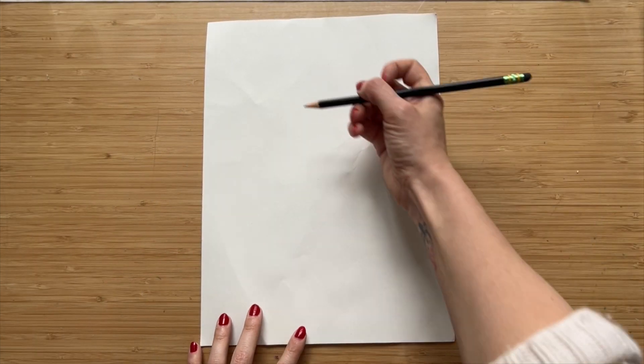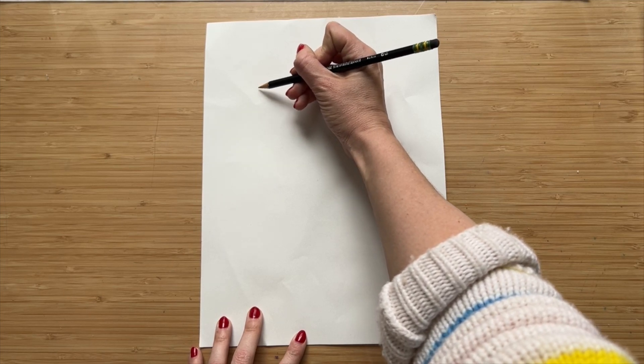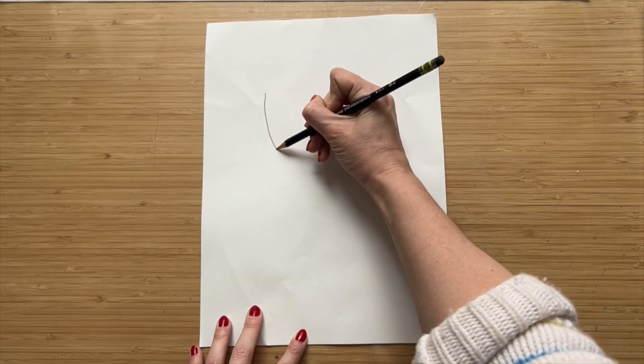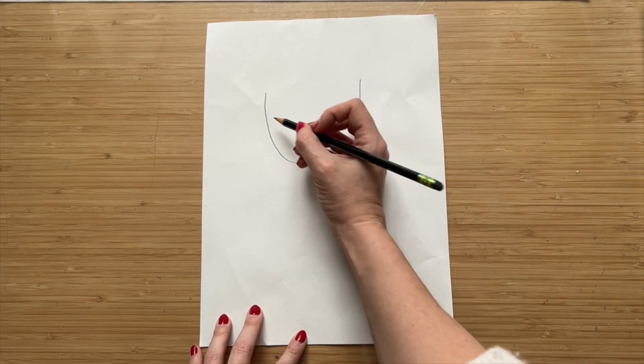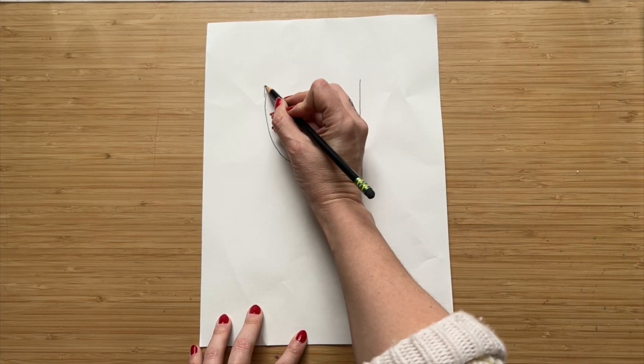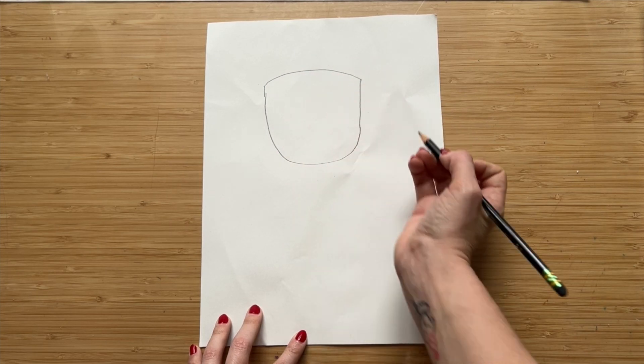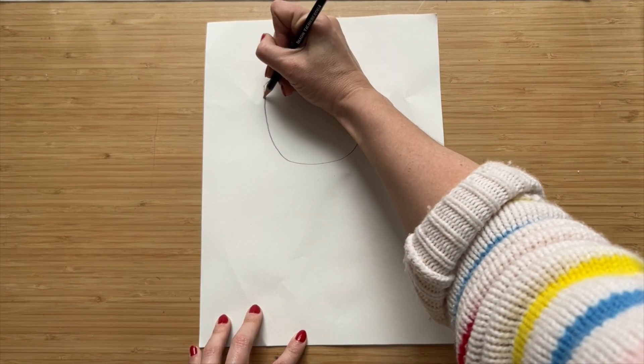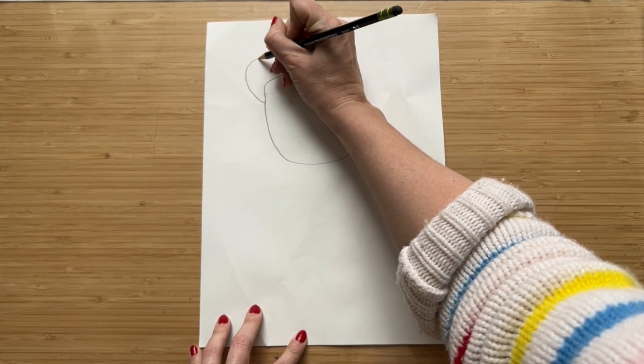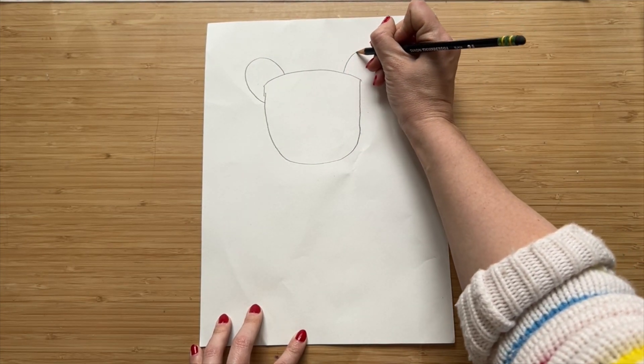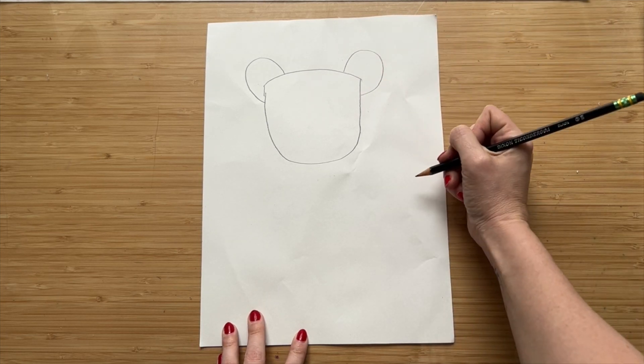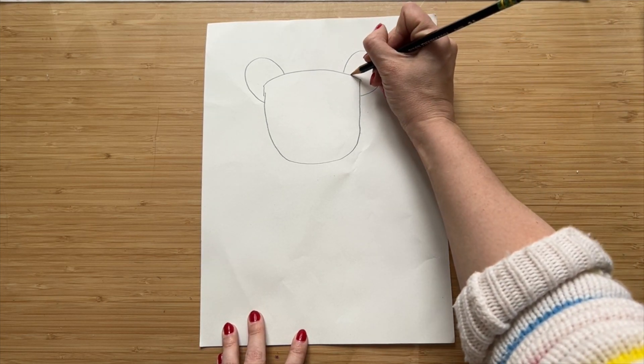The first thing we're going to do is draw a big letter U in the middle of your paper. This is going to be the lion's head. Then you're going to connect the top with a rainbow line. You're going to make two more arcs on the side. Those are going to be the ears, and you can make another little arc in between.